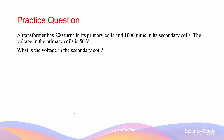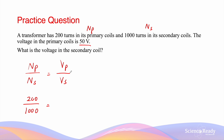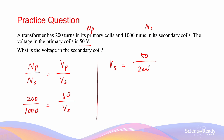Let's have a look at a simple calculation question involving transformers. A transformer has 200 turns in its primary coil (Np) and 1000 turns in its secondary coil (Ns). The voltage in the primary coil is 50 volts. What would be the voltage in the secondary coil? Using the transformer equation, Np over Ns equals Vp over Vs: 200 over 1000 equals 50 over Vs. Rearranging to make Vs the subject gives 50 divided by 200, multiplied by 1000, which gives us the answer of 250 volts.